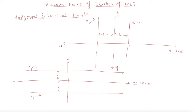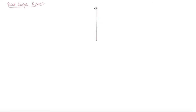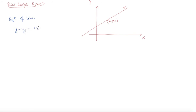Now we will discuss about the point-slope form. In this form, we will be given a slope of the line — let us say it is m — and it is passing through a point, let us say x1 comma y1. In that case, the equation of the line is y minus y1 equals m times x minus x1, where y1 and x1 are the points from which the line is passing and m is the slope of the line. This is the equation of the line in point-slope form.